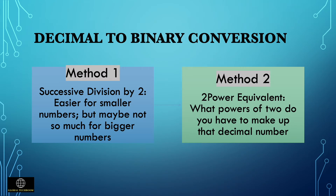In decimal to binary conversion there are two methods. First, let's see the successive division by 2 method. When you divide a given decimal number by 2, you end up with a whole number and a remainder. The whole number is then divided by 2 again until the quotient reaches 1 or 0.